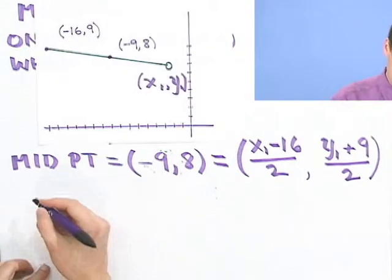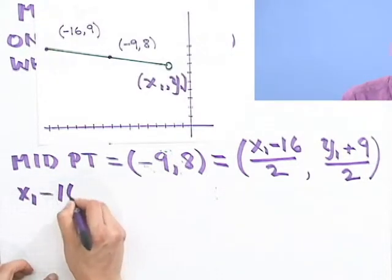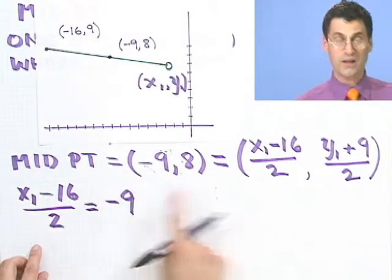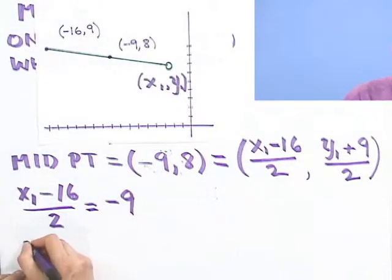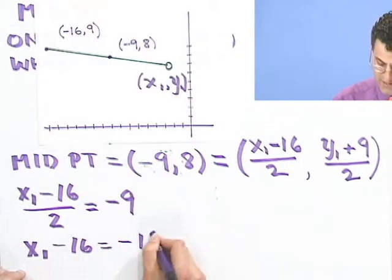I see that x1 minus 16 over 2, that has to equal minus 9. If I multiply through by the 2, I see that x1 minus 16 equals negative 18.